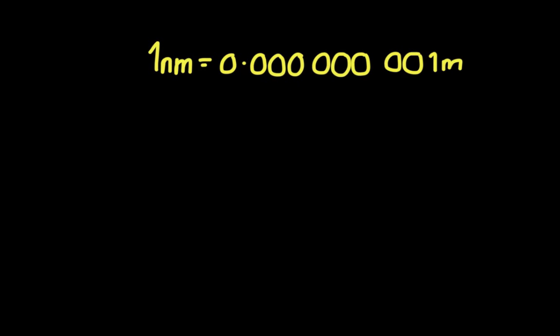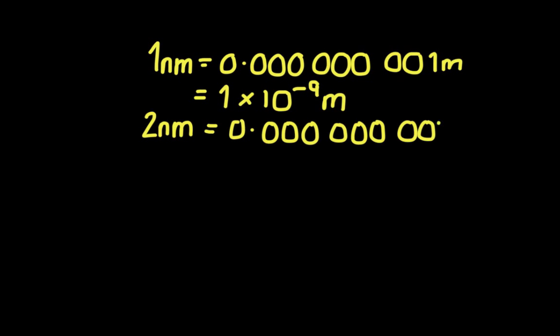So 1 nanometre is 1 times 10 to the minus 9 metres. So it's a very small distance between two points. So therefore, 2 nanometres is 2 times 10 to the minus 9 metres.